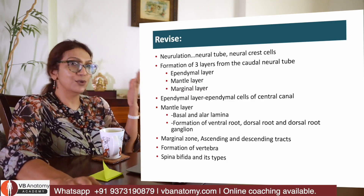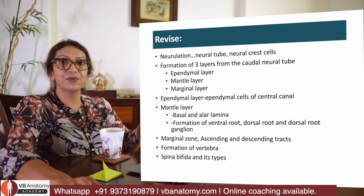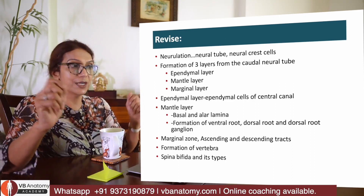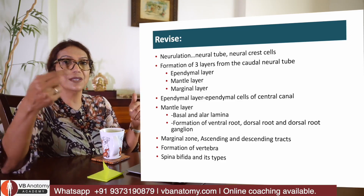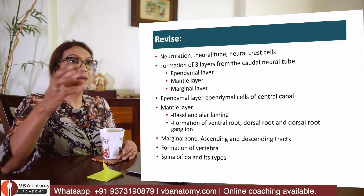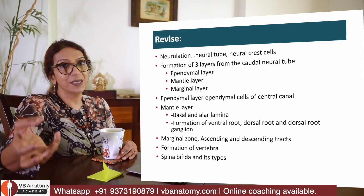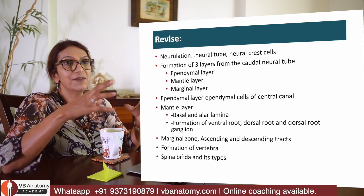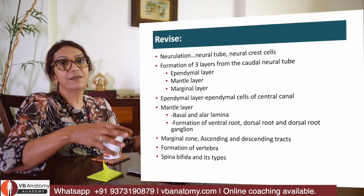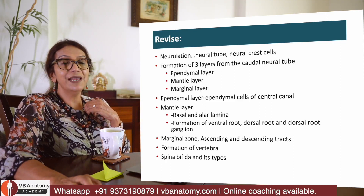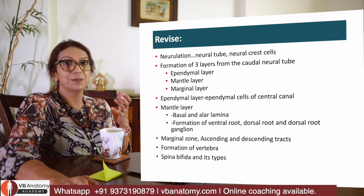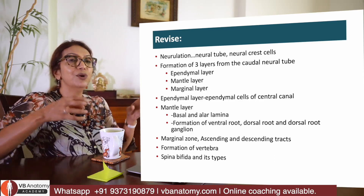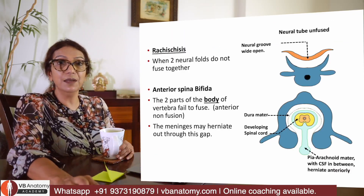Let's revise what we learnt. We covered neurulation, formation of the neural tube, and neural crest cells. Then we discussed how the neural tube got divided into ependymal, mantle, and marginal layers. Ependymal layer forms the central canal; mantle layer forms grey matter; marginal zone forms white matter. The mantle layer formed the basal and alar lamina — basal developing into motor component, alar lamina into sensory component. Finally, we discussed vertebral development, and how if the two neural arches do not fuse posteriorly there is spina bifida, and if anteriorly, anterior spina bifida.